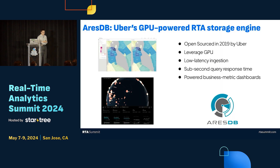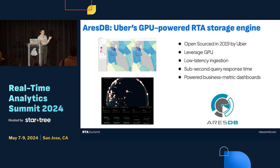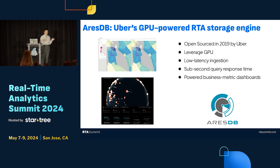The first one is IrisDB. IrisDB was actually built open source by Uber in 2019. One major selling point is that IrisDB leveraged GPU. The goal was to provide low-latency ingestion and fast query response. Back then, it was primarily used for powering some business metric dashboards — showing heat maps of ongoing trips and driver activity.